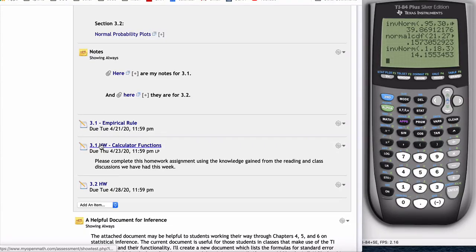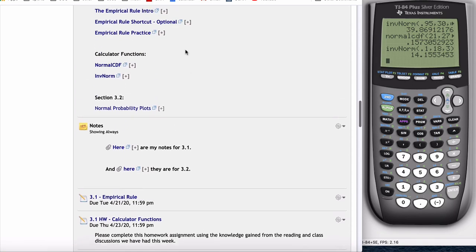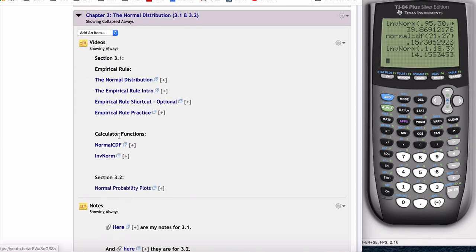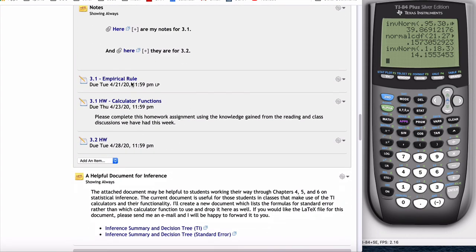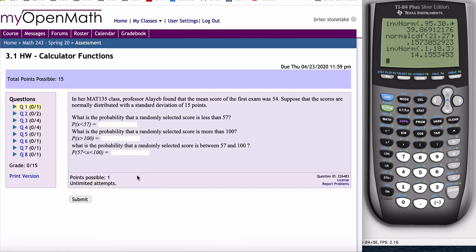All right, in this video I want to talk about another one of the 3.1 homework assignments. I broke 3.1 up into two different sections: empirical rule and calculator function stuff, because there's a lot of information, as you can see by the fact that there's six videos on this stuff. I already went over the empirical rule homework in a different video, so here's one on the calculator function stuff.